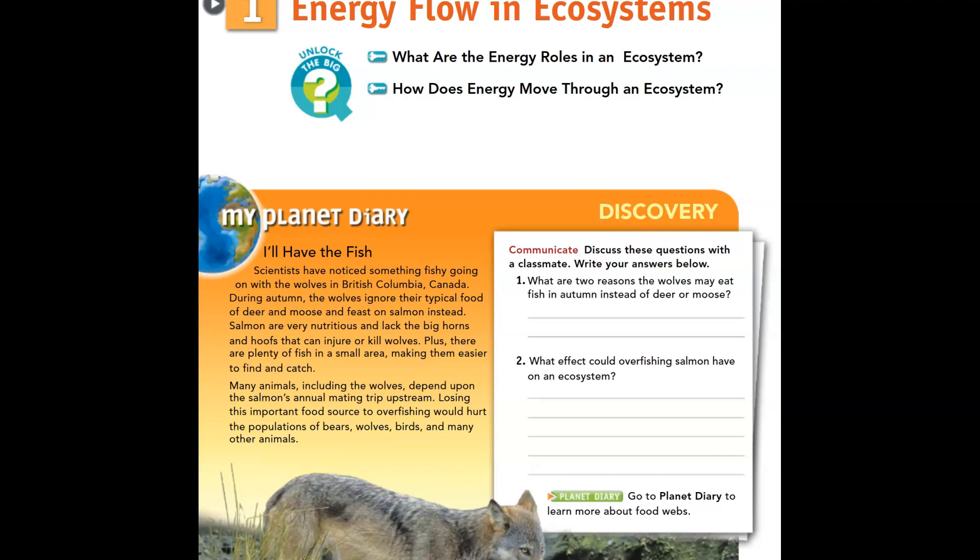Many animals, including the wolves, depend on the salmon's annual mating trip upstream. Losing this important food source to overfishing would hurt the populations of bears, wolves, birds, and many other animals. What are two reasons the wolves may eat fish in the autumn instead of deer or moose? Well, as an example, maybe the fish are easier to find than deer or moose, or maybe the fish aren't going to hurt the wolves.